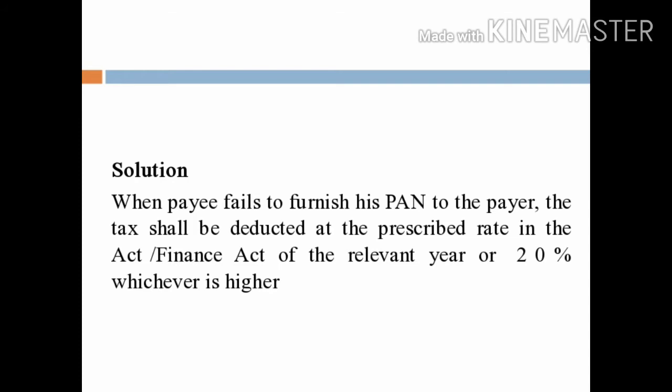When the payee fails to furnish his PAN to the payer, the tax shall be deducted at the prescribed rate in the Act or Finance Act of the relevant year, or 20%, whichever is higher.